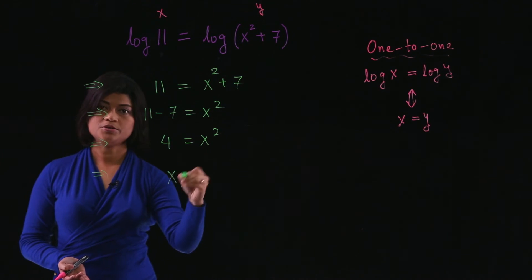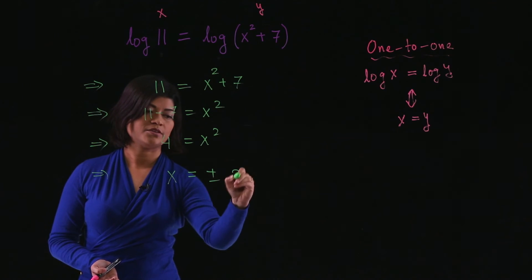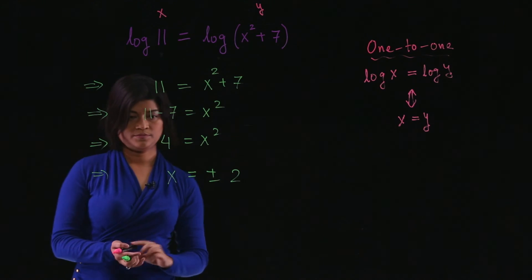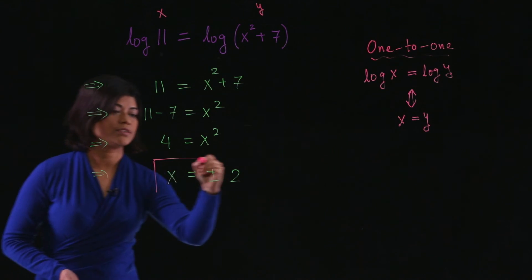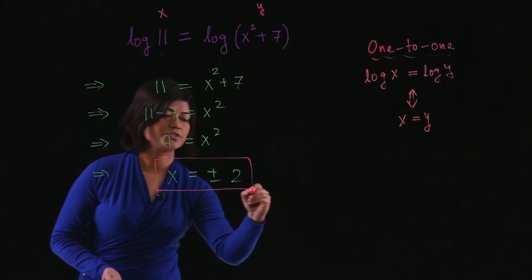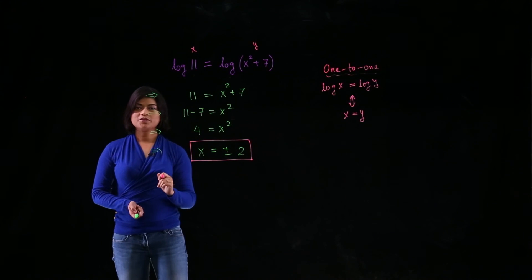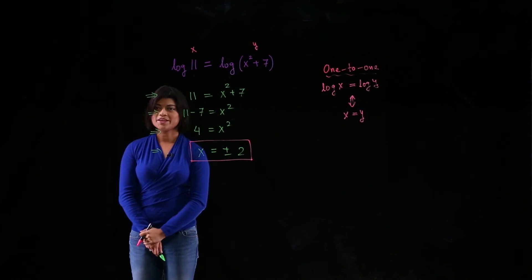Take the square root. So x equals plus or minus 2. This is our solution: x equals plus or minus 2. Thank you.